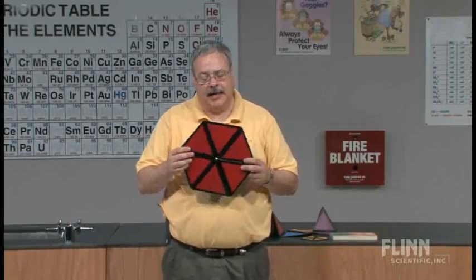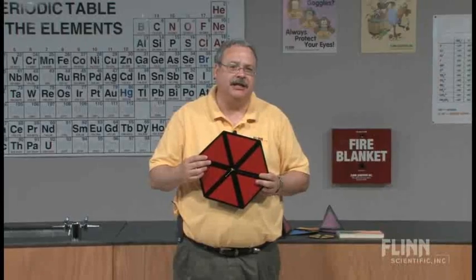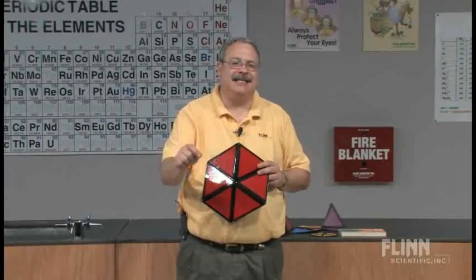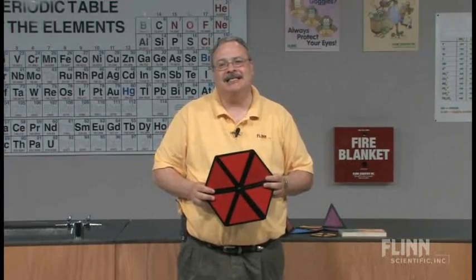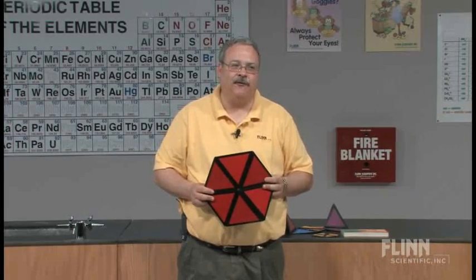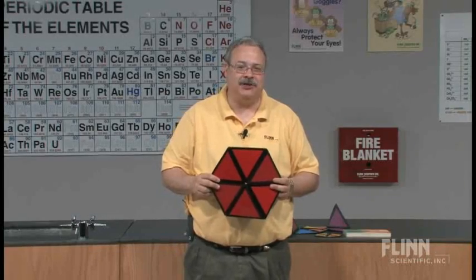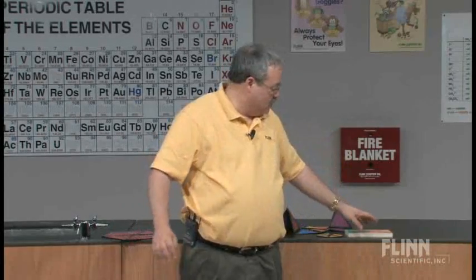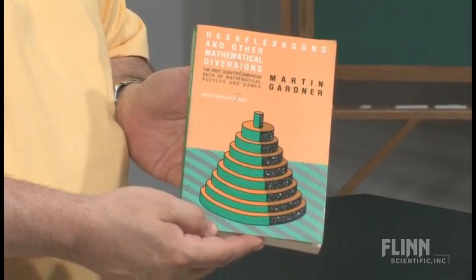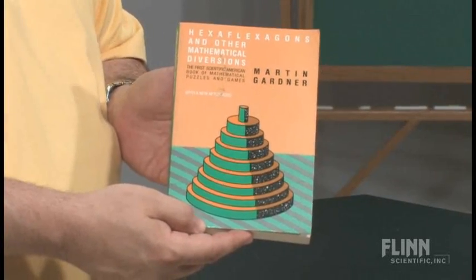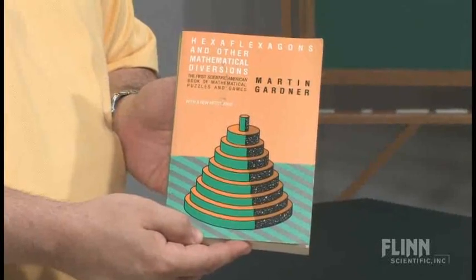I also use this where I have a single solution that I pour into six different containers — a single buffer solution into six different indicators — getting these six different colors, once again bringing in the chemistry. For further reading, if you've heard of Martin Gardner, this is one of his first books through Scientific American: Hexaflexagons and Other Mathematical Diversions. You might find it in the library, and instructions for students to build their own hexaflexagon will be in the write-up.